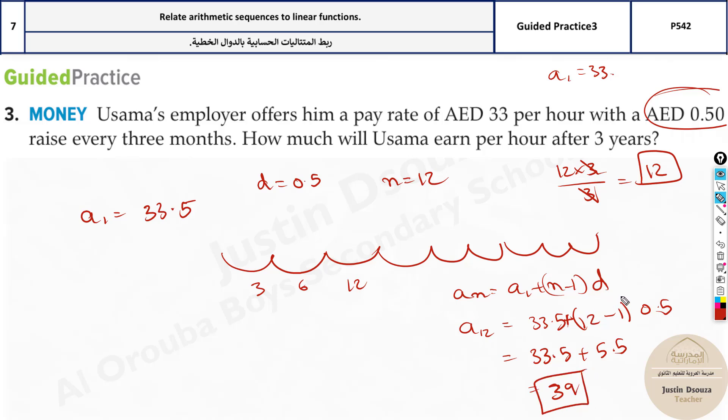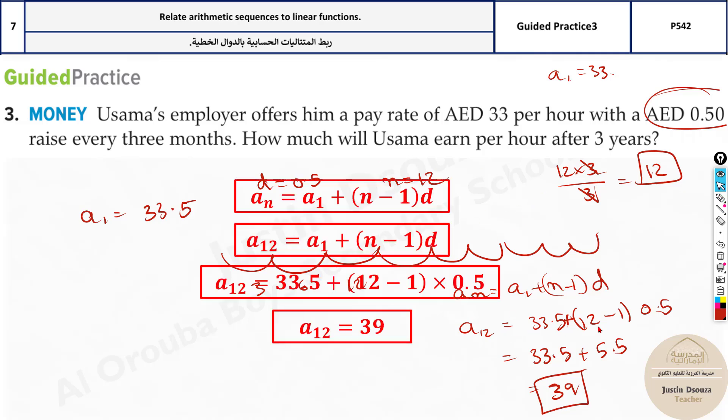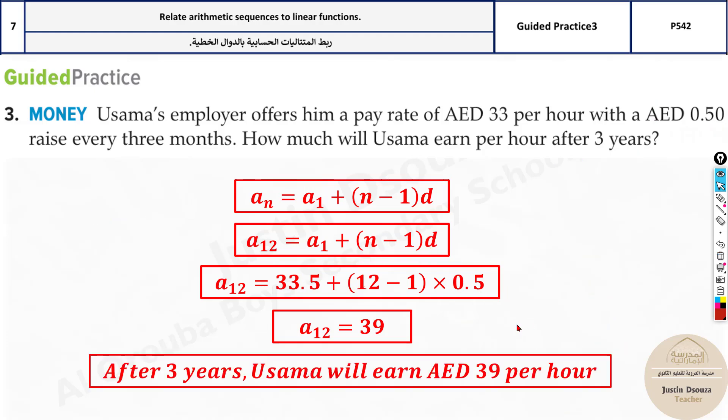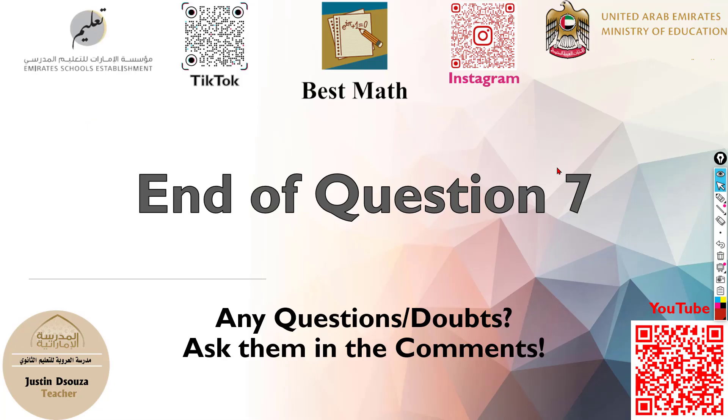So after 3 years, the salary per hour will be 39 dirhams. So this is how we solve it. You can see here, that's the answer. And that is the end of this question.